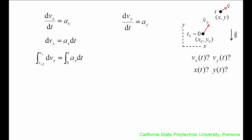We can perform a similar set of steps for the acceleration in the y-direction, which we will call ay. This is equal to the time rate of change of vy, written as dvy/dt. Let's rearrange the expression to isolate dvy, then integrate ay dt from the initial time, which is 0 seconds, to the final time t. dvy is integrated from the initial velocity vy0 to the final velocity vy.